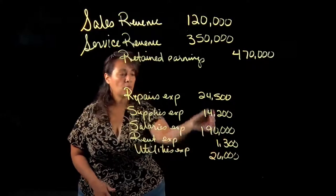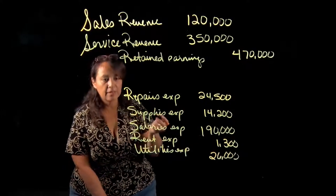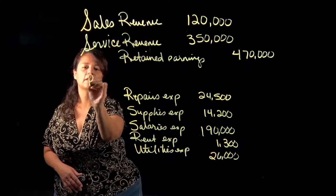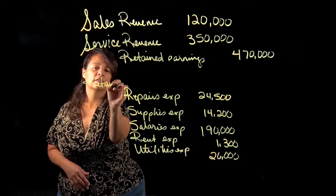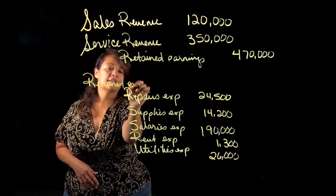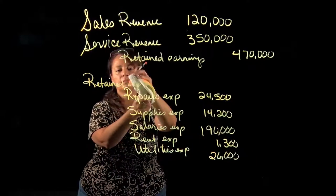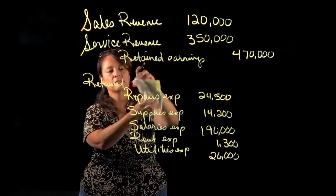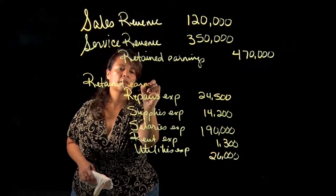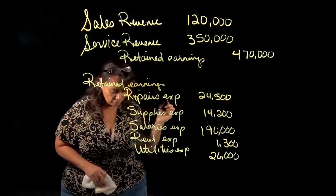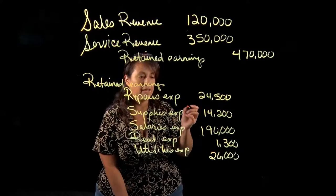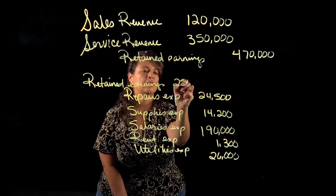And finally utilities expense for $26,000. All right, so these are all our credits, and our debit in this case is going to be retained earnings for the sum of all of those accounts, and that is $256,000.